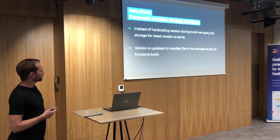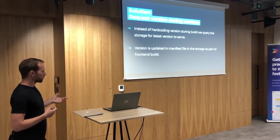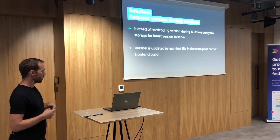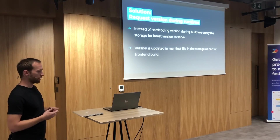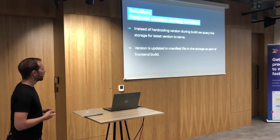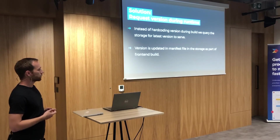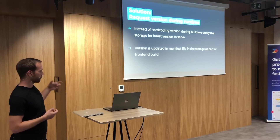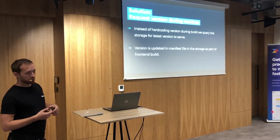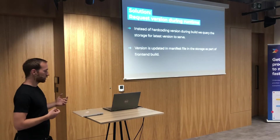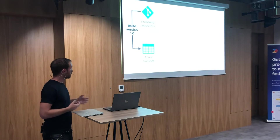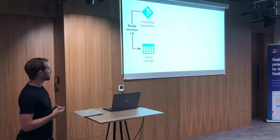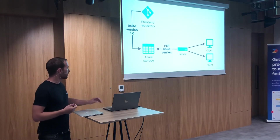The second thing we changed: we changed the server to query the storage for the version it should serve. So it's always asking at some interval, 'Hey, what's the latest version?' The version itself is written in a manifest file, which simply says 'the latest version is this one.' Whenever the version is changed as part of the build, the server downloads the latest version and starts serving that one.